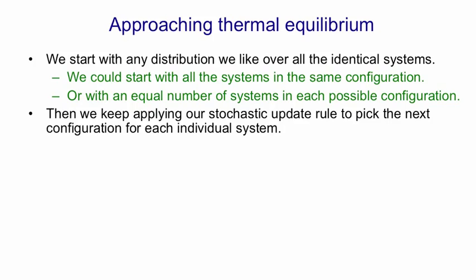Then we're going to keep applying our stochastic update rule, which in the case of a stochastic Hopfield net would mean you pick a unit and you look at its energy gap, and you make a random decision based on that energy gap about whether to turn it on or turn it off, then you go and pick another unit and so on. We keep applying that stochastic rule.